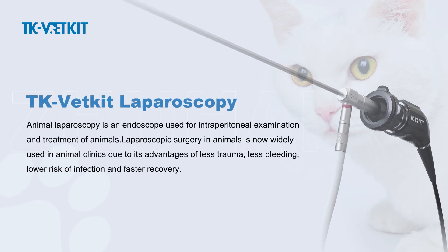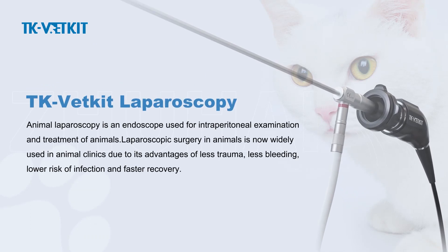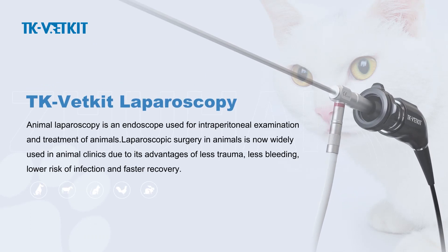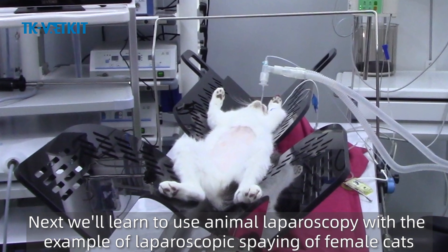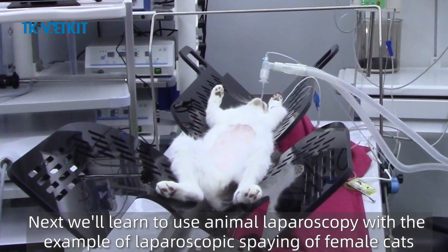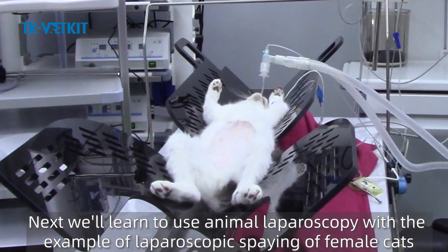Animal laparoscopy is an endoscope used for intraperitoneal examination and treatment of animals. Laparoscopic surgery in animals is now widely used in animal clinics due to its advantages of less trauma, less bleeding, lower risk of infection, and faster recovery. Next, we'll learn to use animal laparoscopy with the example of laparoscopic spaying of female cats.